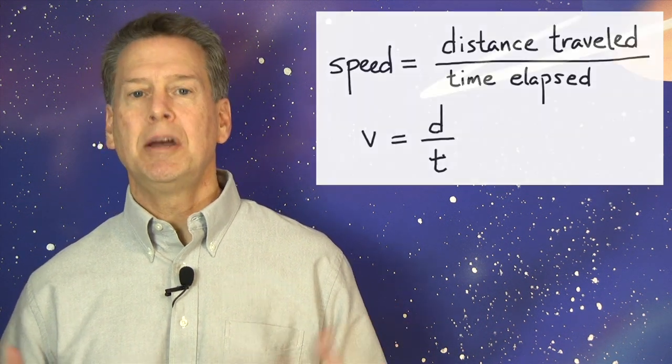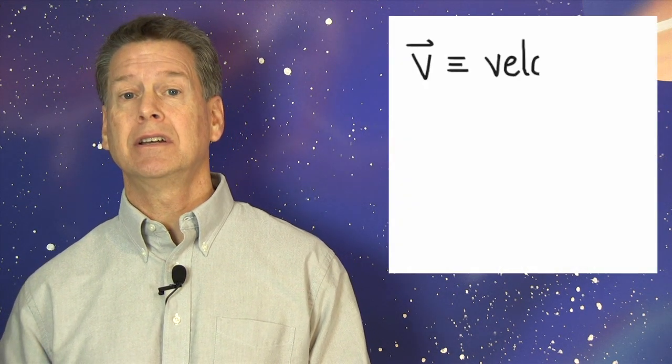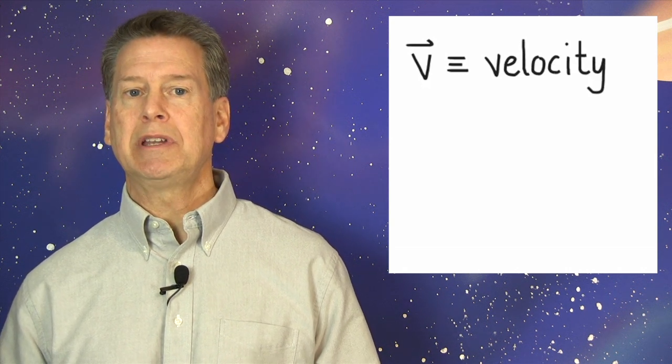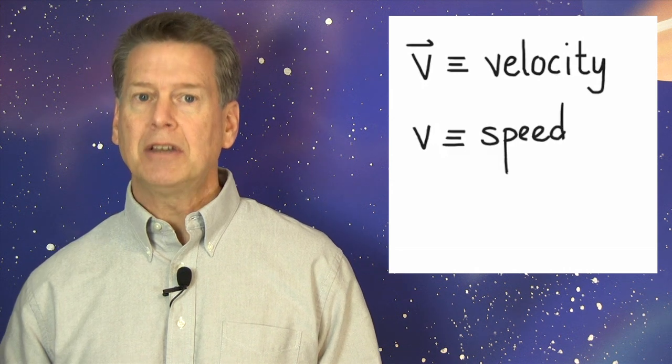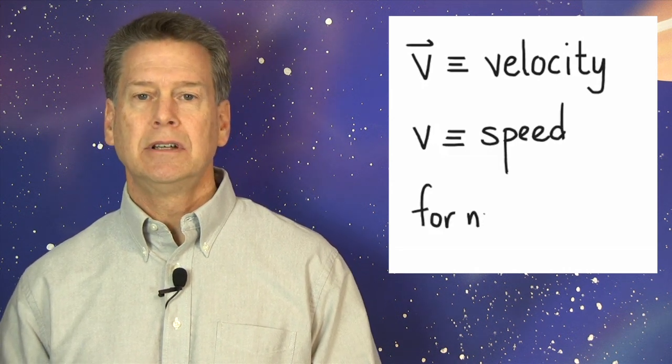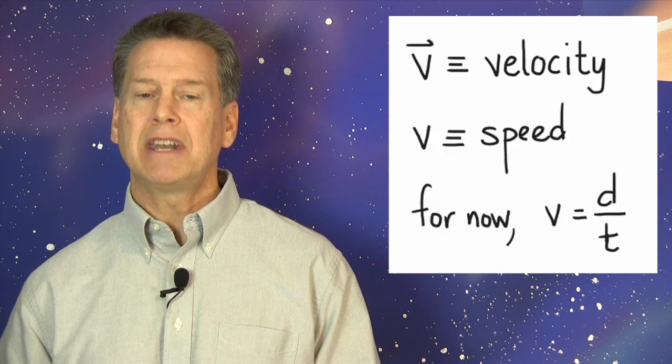Around the world, people use the symbol v for speed because of speed similarity to velocity v-vector. We'll make the important distinction between speed and velocity in a later episode, but v will always stand for speed. For now, speed equals d divided by t.